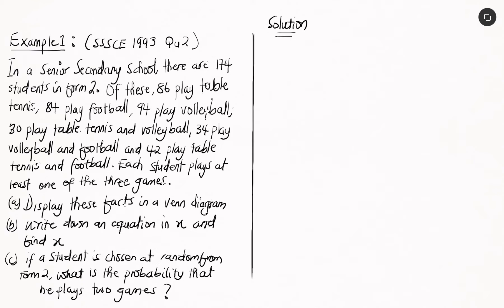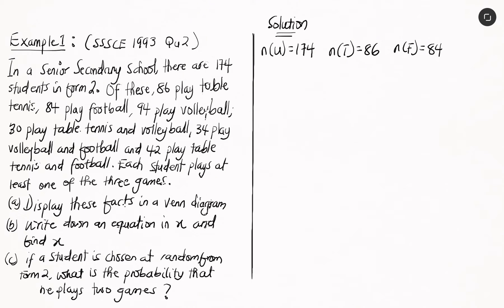First, let's write down all the things we know. We were told that there are 174 students in form 2, so our universal set NU equals 174. 86 play table tennis, so NT equals 86. 84 play football, so NF equals 84. And 94 play volleyball, so NV equals 94.